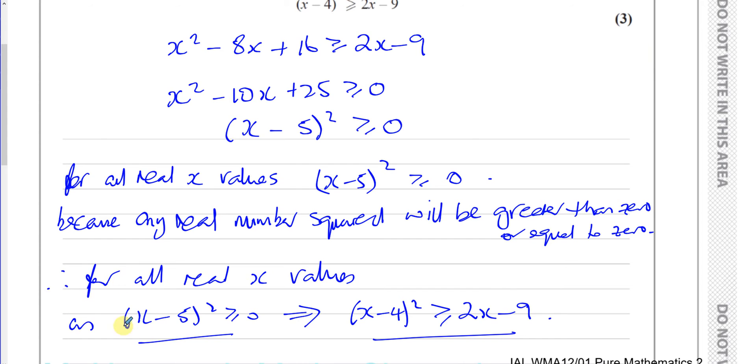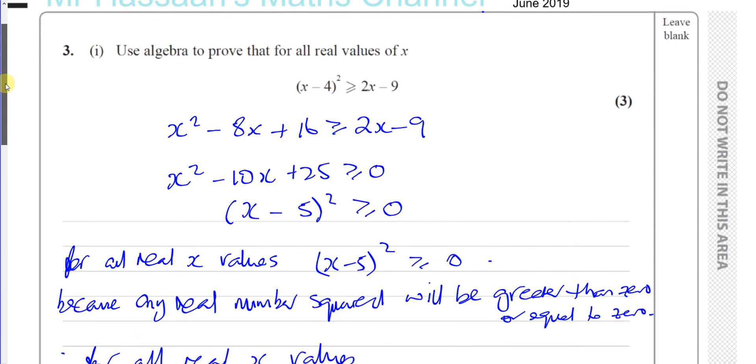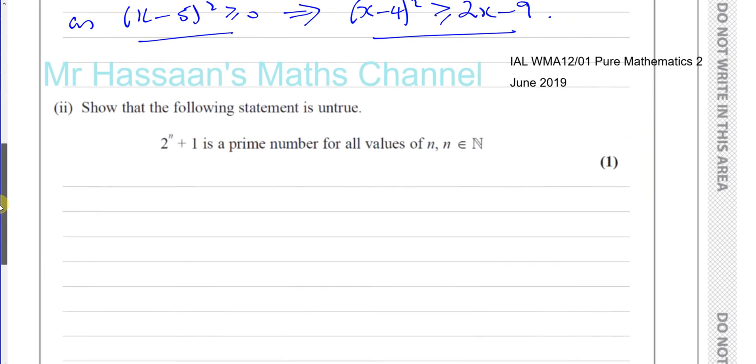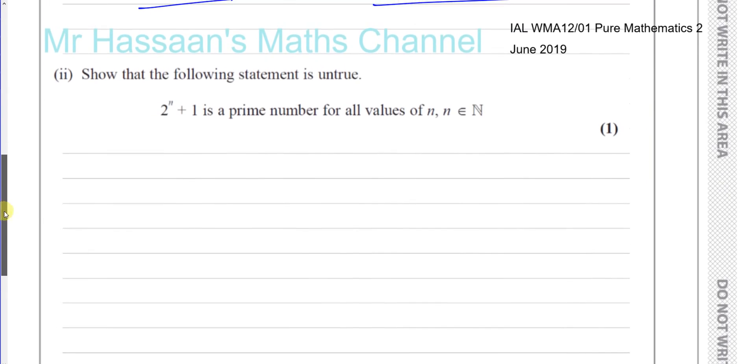So you should put a little statement at the end, stating your proof, basically. All right, number 2, part 2. It says, show that the following statement is untrue. Now, this is something called proof, or you can say that you're proving something is incorrect by what's called a counter-example.